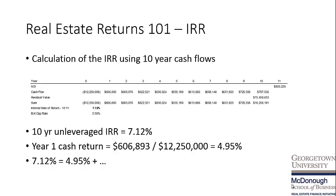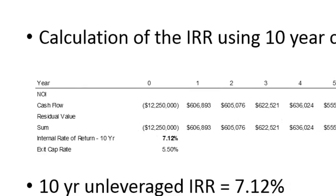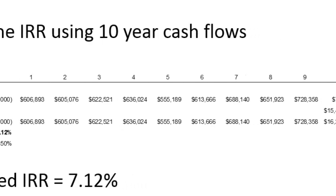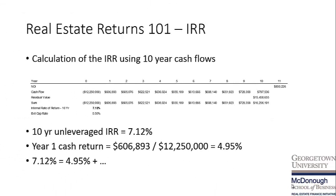To calculate our 10-year unlevered internal rate of return, you'll see that we acquired the property for a purchase price of $12.25 million. You'll see the annual cash flows through years one to nine. In year 10, you'll see the sum of the year 10 cash flow plus the residual value, found by taking the year 11 NOI and dividing it by our exit cap rate of 5.5%. We have determined that the year one cash return is 4.95%.